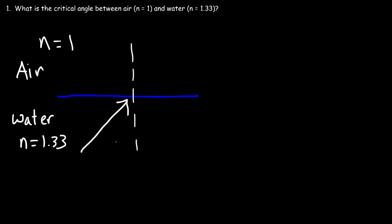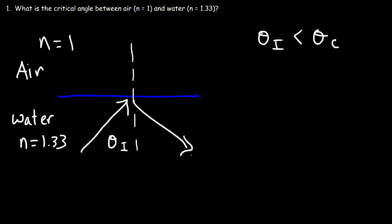This is the angle of incidence. If the angle of incidence is less than the critical angle, two things will happen: some of the light rays will bounce back, so reflection will still occur, but some of it will pass through the air-water boundary, so refraction will also occur.